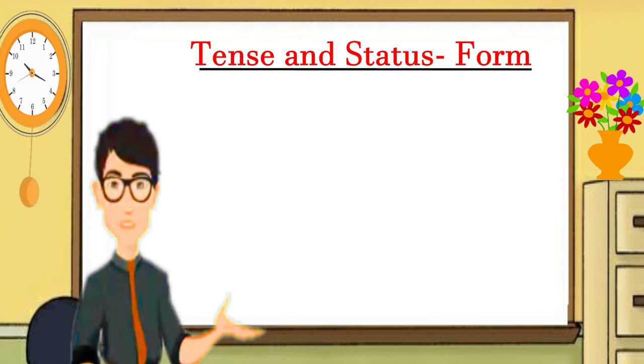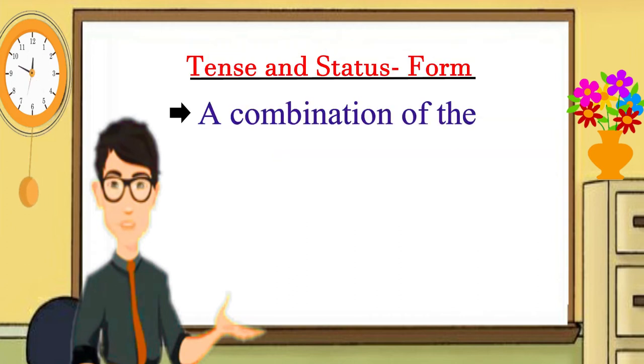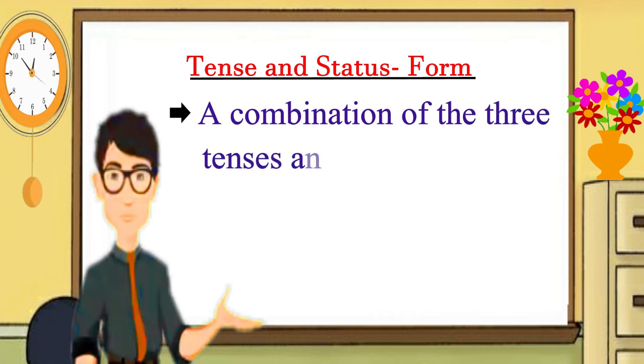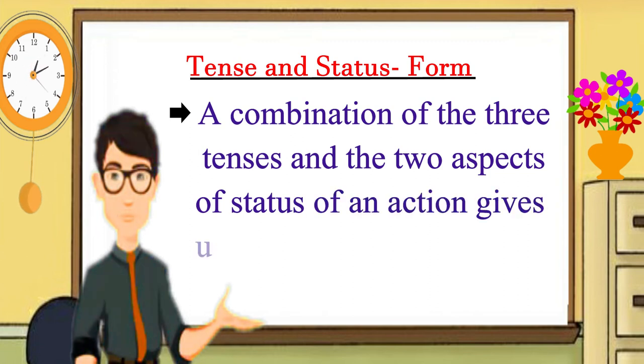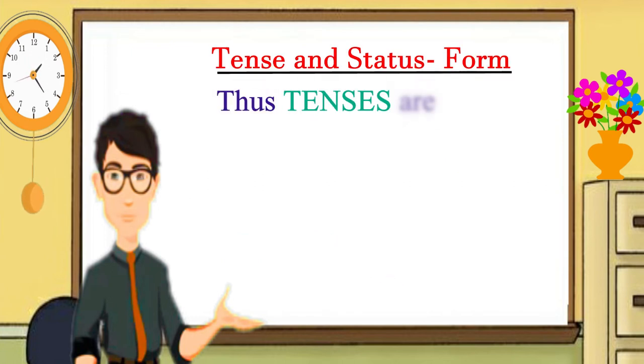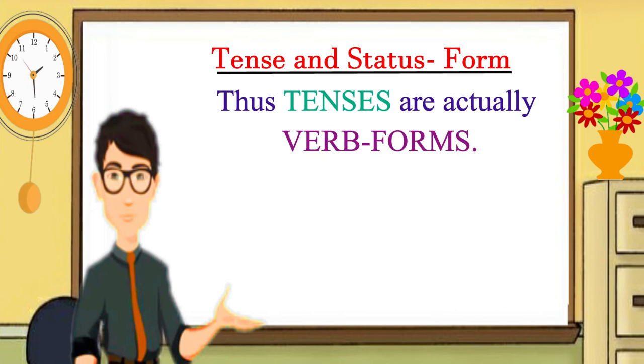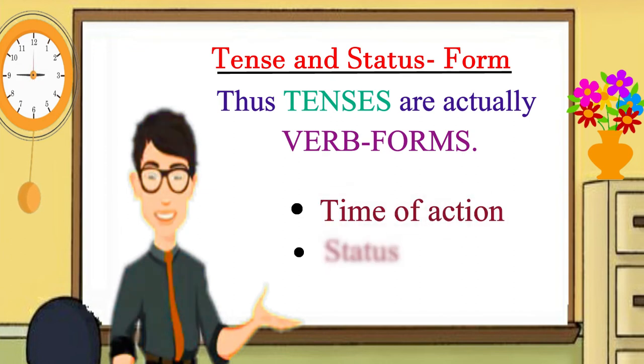It also shows the status of an action, whether the work or the action has been completed, that is perfect, or it is still continuing. A combination of the three tenses and the two aspects of an action gives us the 12 forms of a verb. The tenses, thus, are actually verb forms and they show us both the time of an action and also the status of the action.